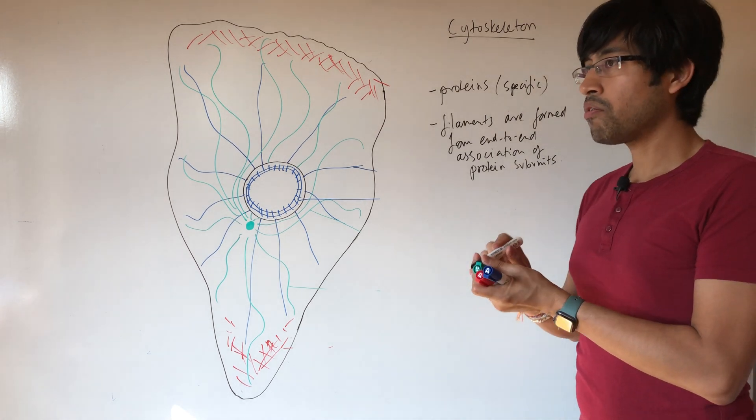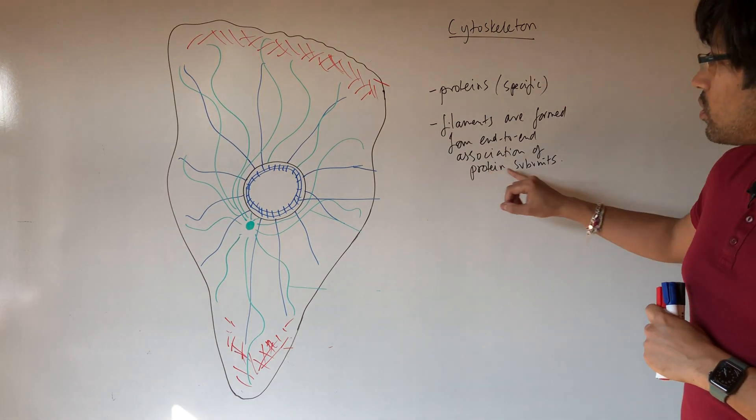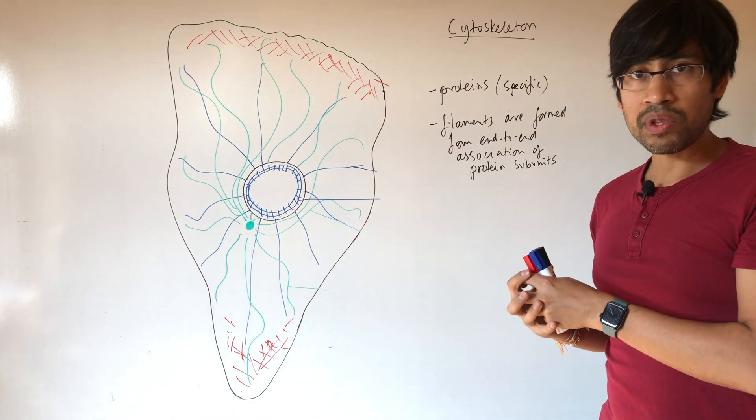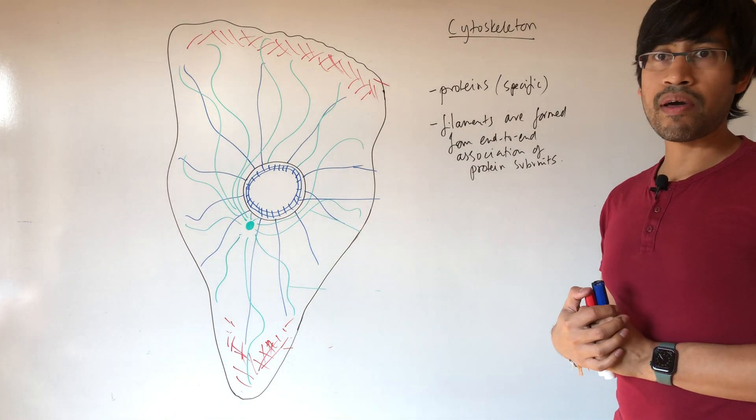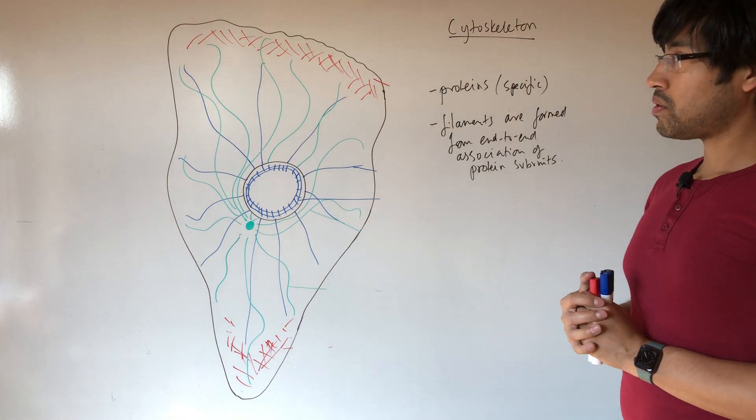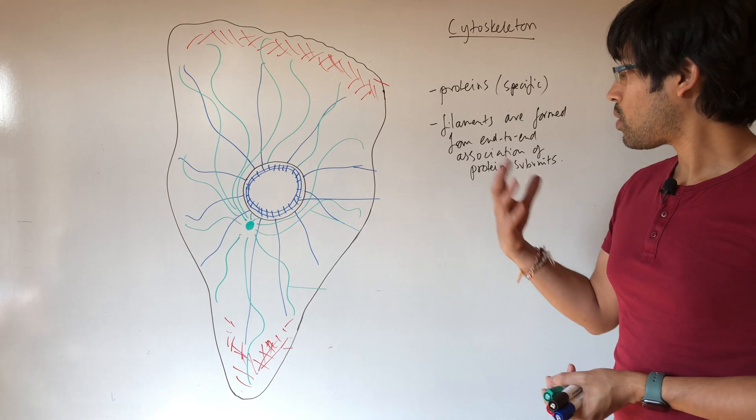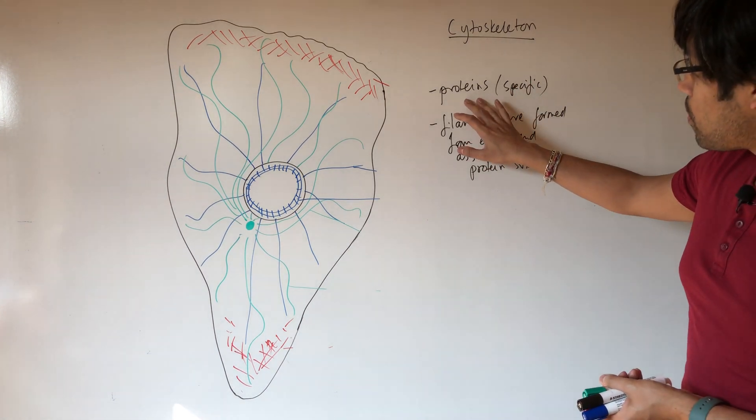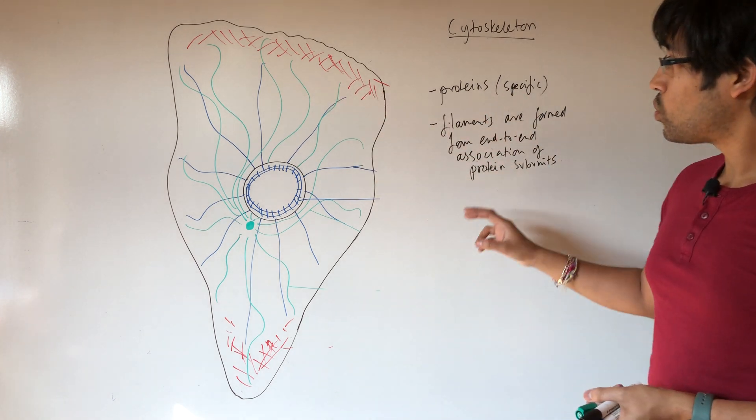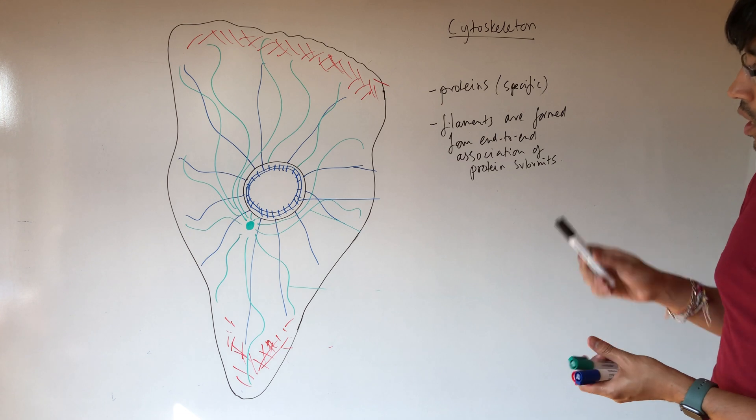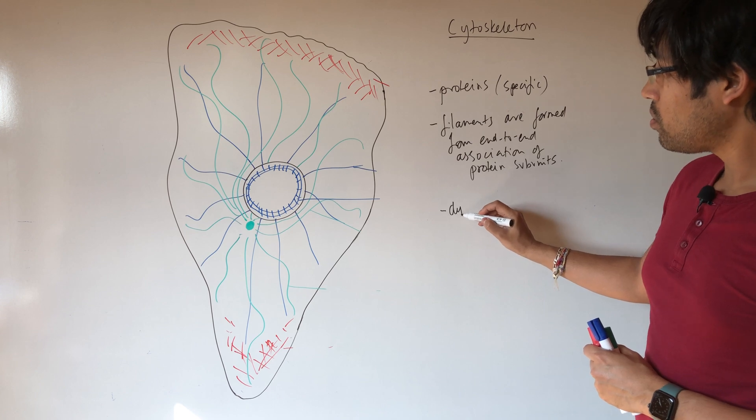So it's you could think of it like this giant quaternary structure where individual proteins have to come together, associate with each other non-covalently, in order to perform their function. It's just that this quaternary structure, instead of having four subunits like maybe a hemoglobin does, there's many hundreds, many thousands. So proteins are making up these filaments. The filaments are formed by the end to end joining of the proteins. And the next key point is that all of these filaments or all of these structures are dynamic.